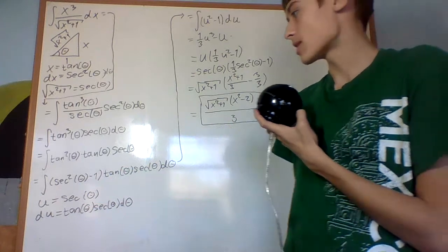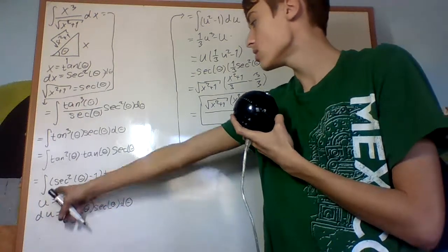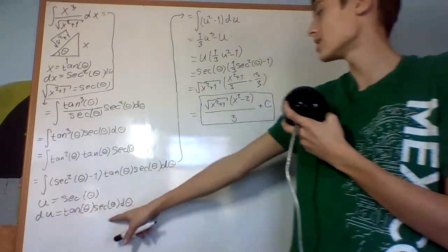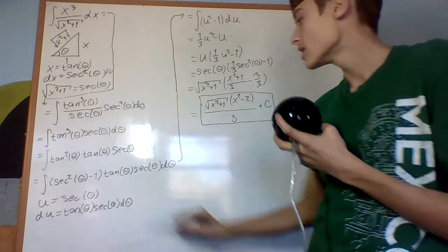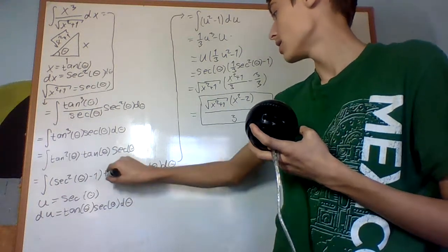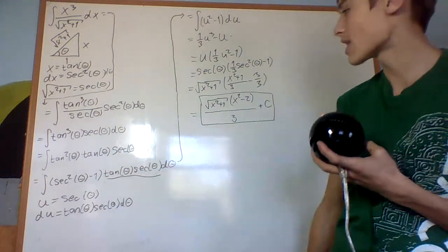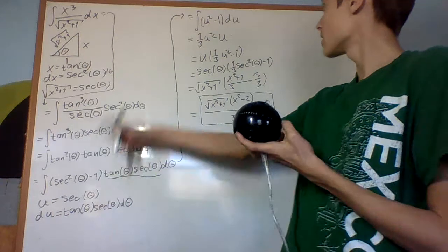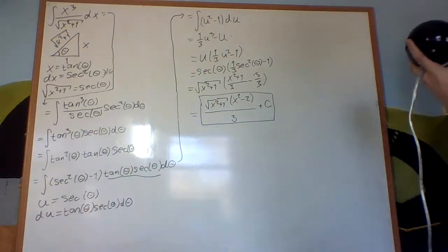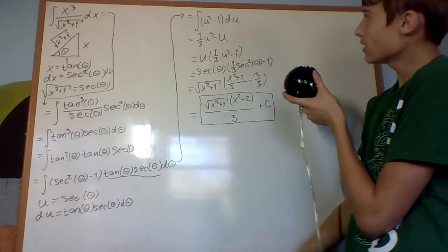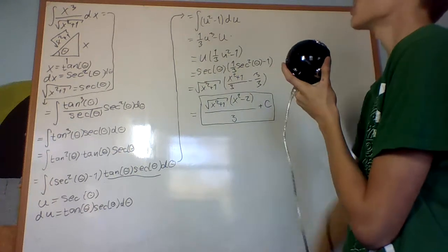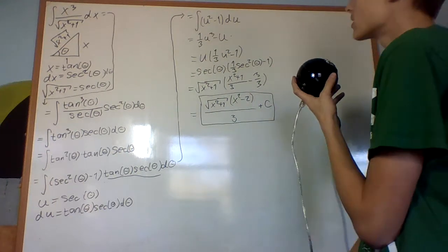Then I make the substitution u equals secant theta, so that du is tangent theta secant theta d theta, so that I essentially eliminate that from the equation and get u squared minus 1 du. From that, it's a pretty easy integral — you get 1 third u cubed minus u.